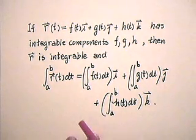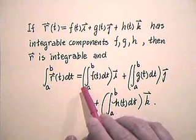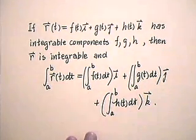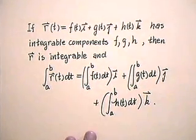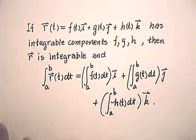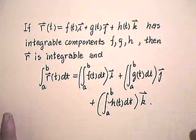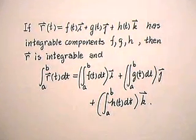To anti-differentiate r(t), we just anti-differentiate each component. That's because differentiation is done component-wise, so that's all there is to it. Let's compute some integrals of vector-valued functions.